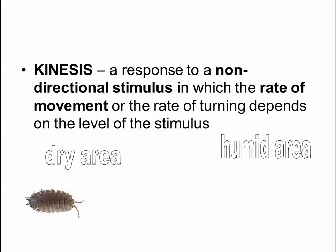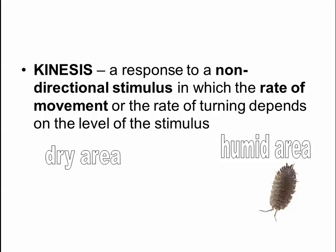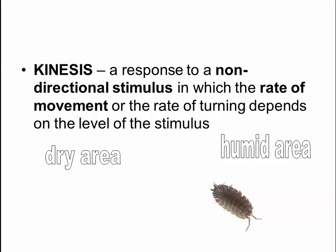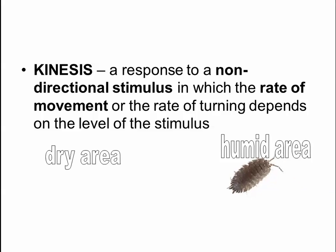Another type of innate behavior is called kinesis. Kinesis is non-directional — it's a response to a non-directional stimulus in which the rate of some kind of activity or movement will increase or decrease. This happens with wood lice, for example. In dry areas they don't move around much, but in humid areas they tend to be a lot more active. Overall, you can assume this helps to increase their survival.